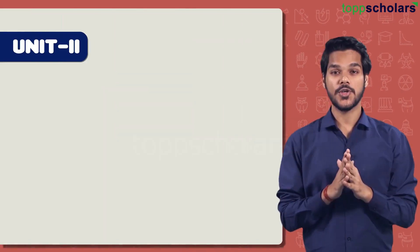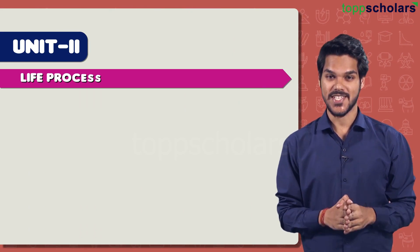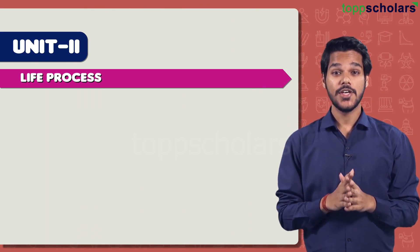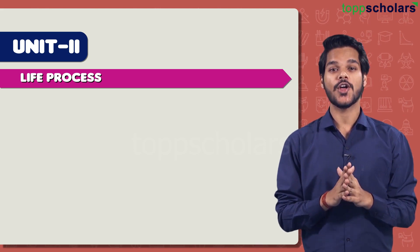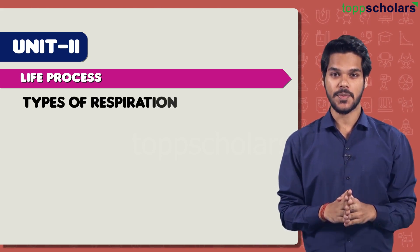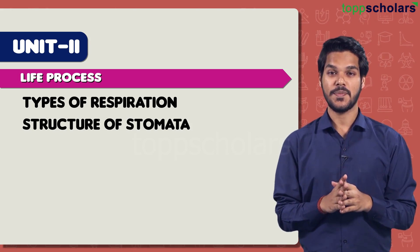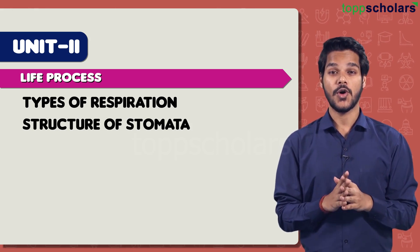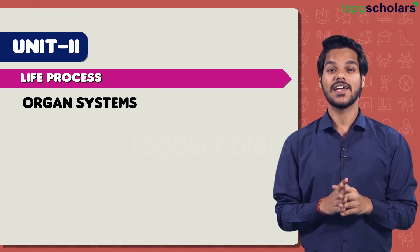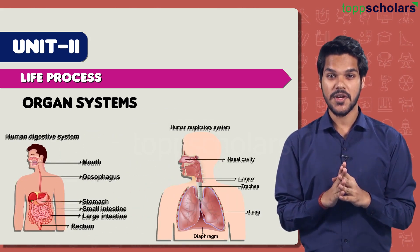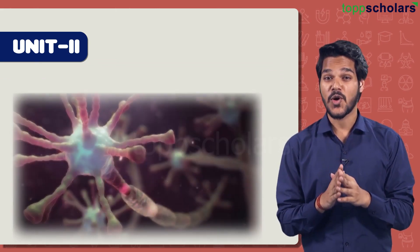Now let's talk about Unit 2, which has four chapters. Starting with Life Processes — from this chapter you can expect experiment-based questions on concepts like types of respiration and structure of stomata. You can also expect diagram-based questions on various organ systems, for example the digestive system and respiratory system.